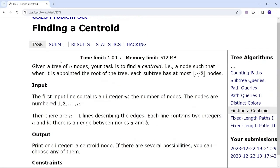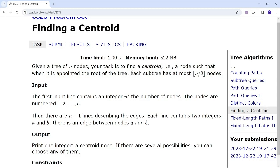The problem says you are given a tree of n nodes. Your task is to find a centroid, that is a node such that when it is appointed the root of the tree, each subtree has at most n by 2 nodes.